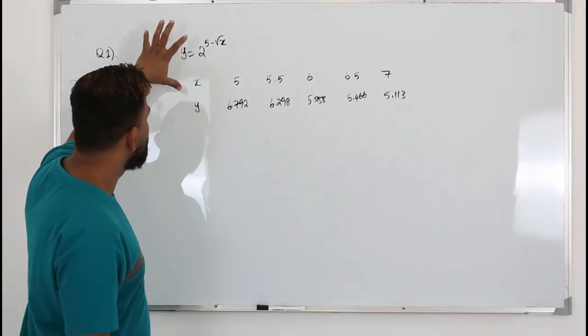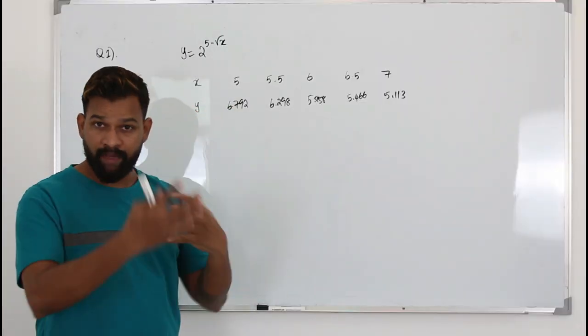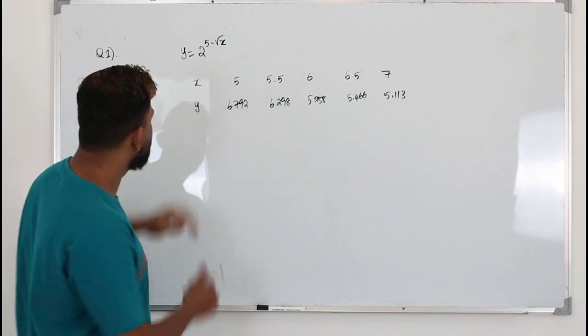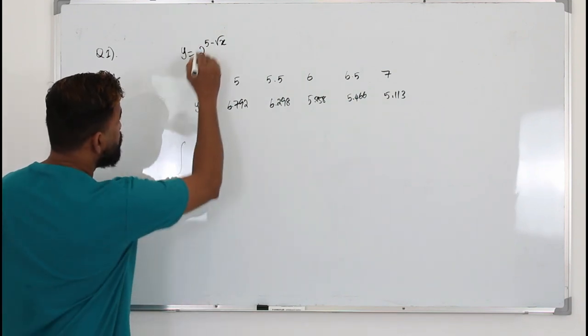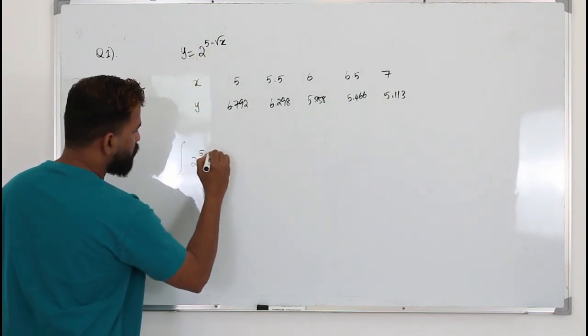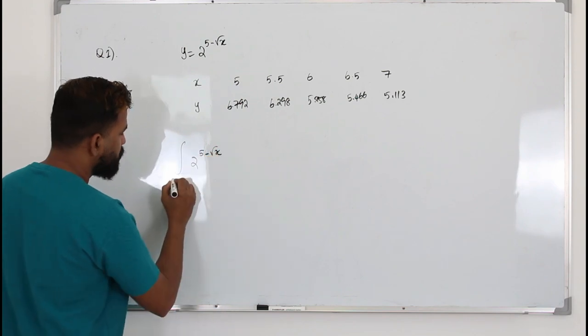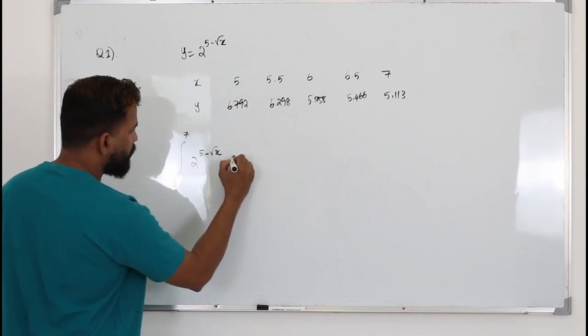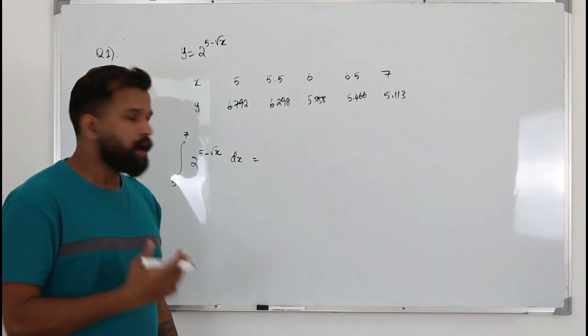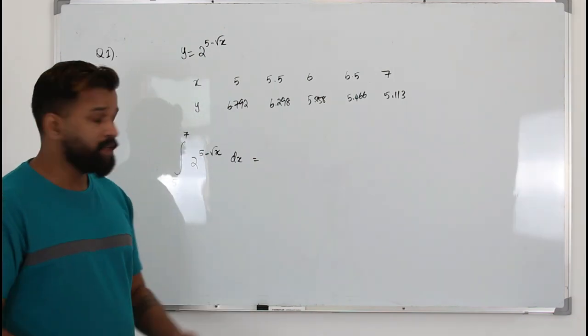Here in this question number one, they want you to use trapezium rule to find the integral of this given function 2 to the power 5 minus square root of x from 5 to 7. How do we do that? We apply the trapezium rule.